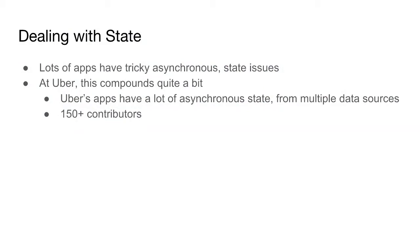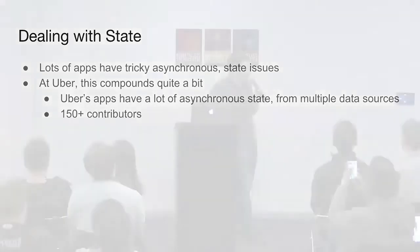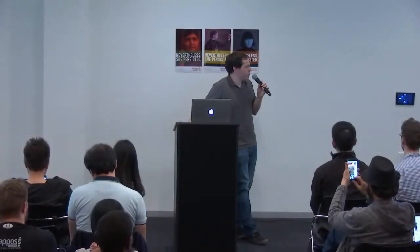Maybe you work on a mobile photo uploading app — you could upload a photo asynchronously and the user can sign out. What should happen there? Sometimes there are product features you just don't know about until the user runs into them. At Uber, this is particularly tricky. We have lots of asynchronous state: you can request a trip, maybe the driver accepts then cancels, maybe you're in an Uber Pool trip and you get another rider. There are lots of asynchronous things happening at all times, and the app has to handle them correctly.